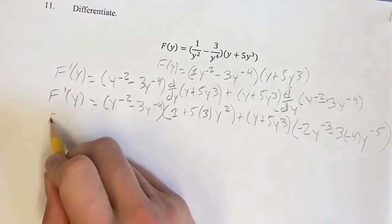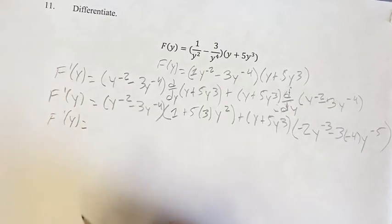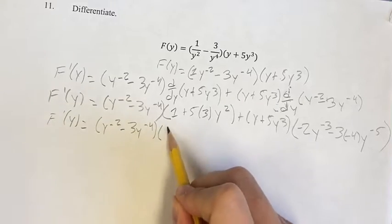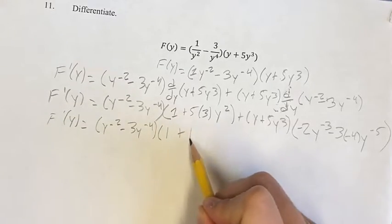Now this is just something you can simplify. We get y to the negative 2 minus 3y to the negative 4 times 1 plus 5 times 3 is 15y squared.